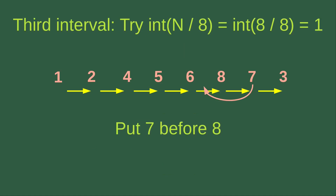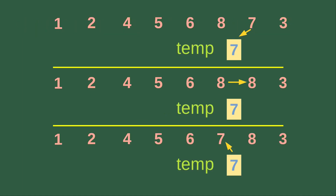The next insertion sort involves putting 7 before 8. We copy 7 to the temporary variable, then copy 8 to replace 7, and then copy the temporary variable to the left-hand side so that the original value of 8 becomes 7. The swapping is complete, and 7 goes before 8.